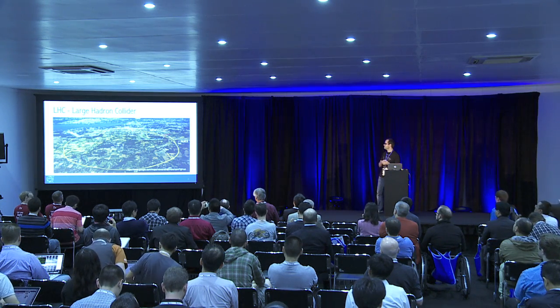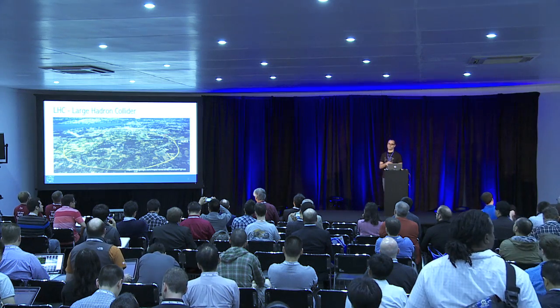The LHC is CERN's largest accelerator. It's a 27-kilometer ring, crosses two countries, and is 100 meters underground. LHC stands for Large Hadron Collider, and it accelerates particles from two beams traveling in opposite directions that collide in four points — the experiments CMS, LHCb, Atlas, and Alice. If you're interested in exploring the LHC and the experiments, you can now see them using Google Street View. It's really cool.